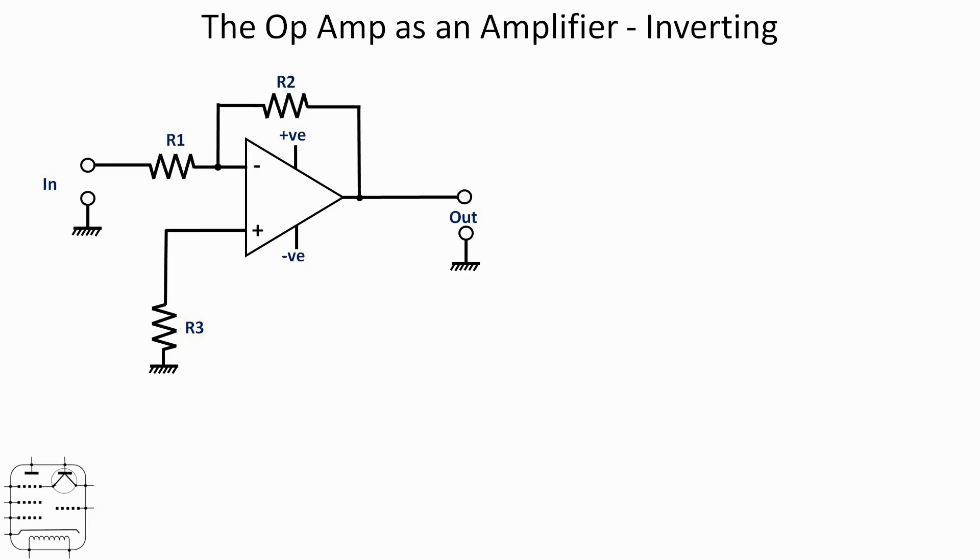The feedback is coming back in the same way and we've got the positive side connected to ground through R3 with a limiting resistor R1. First thing to say here is that the output of this amplifier will be 180 degrees out of phase with the input.